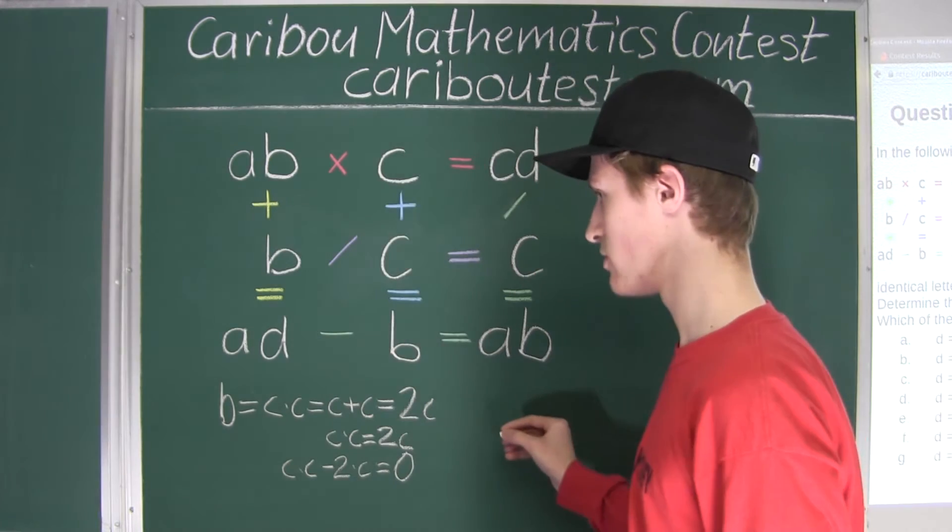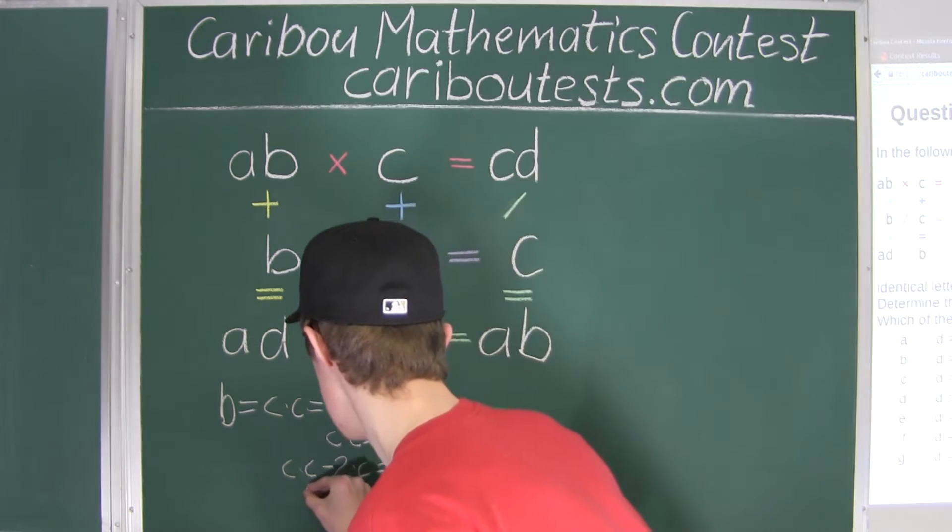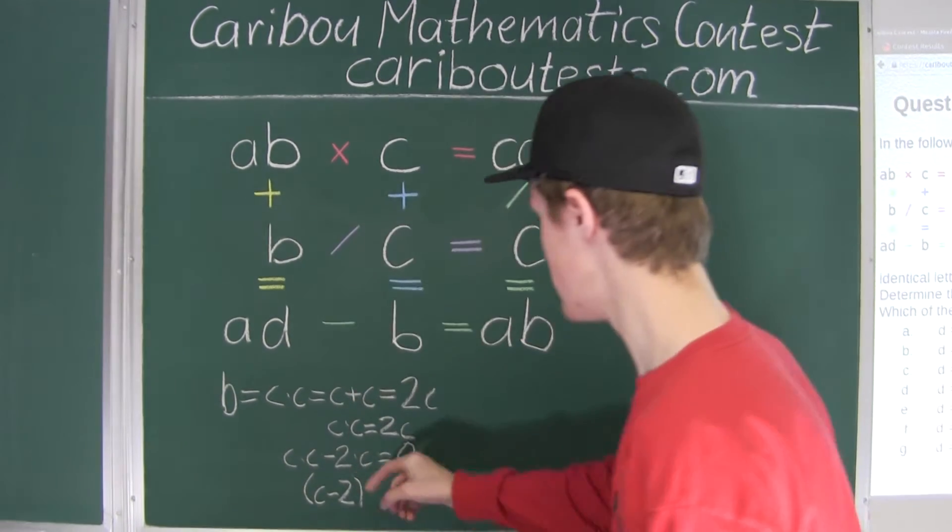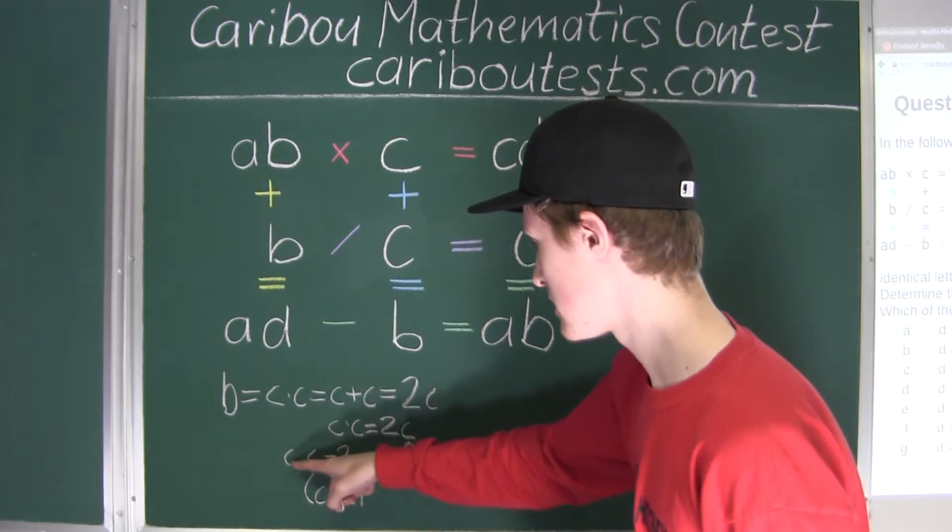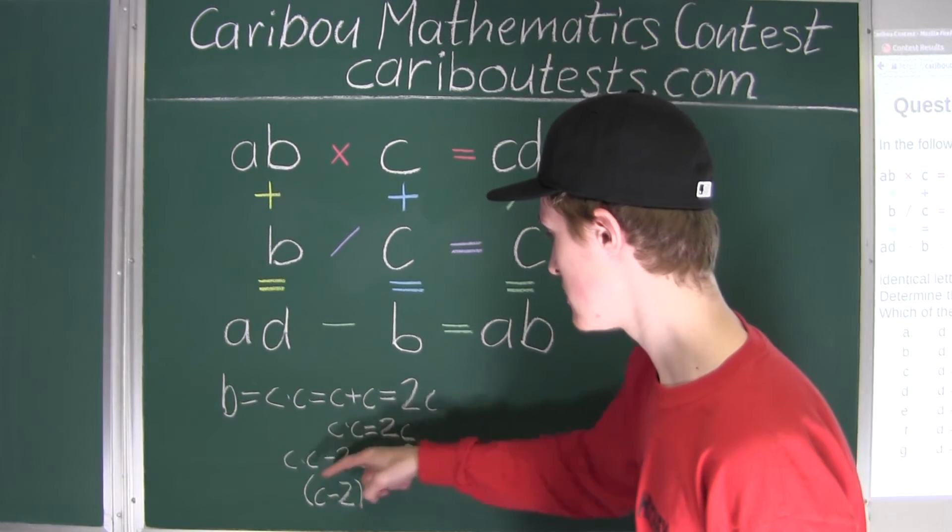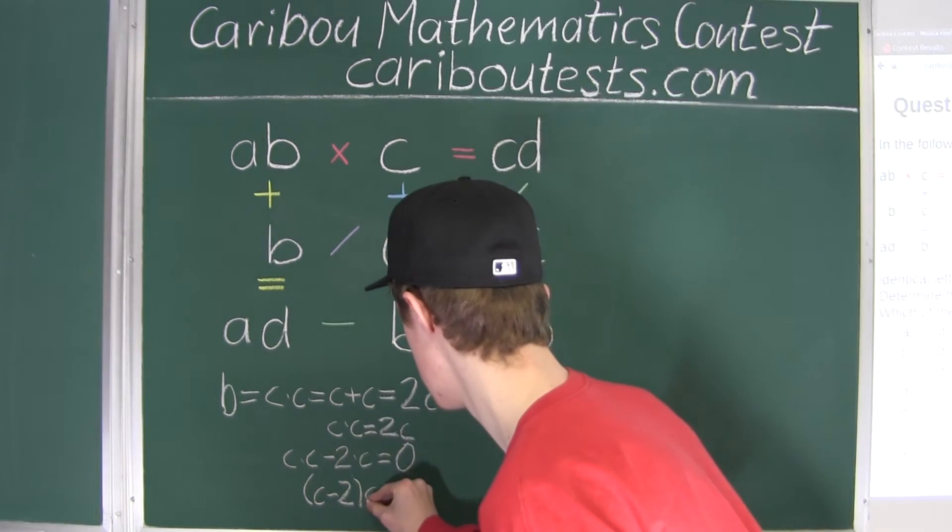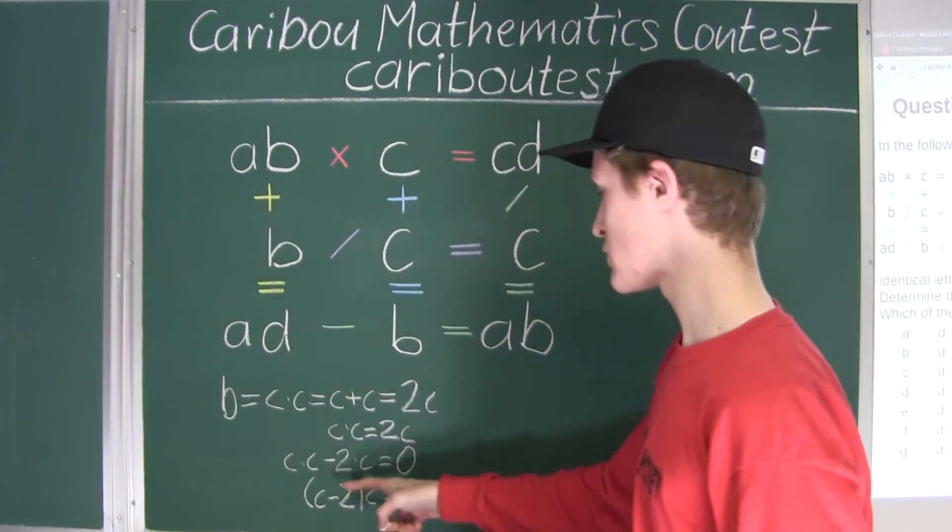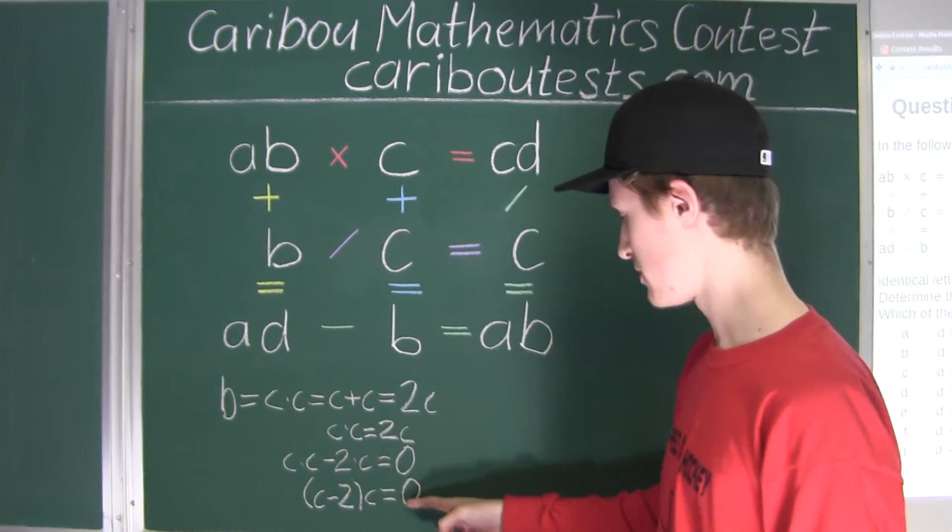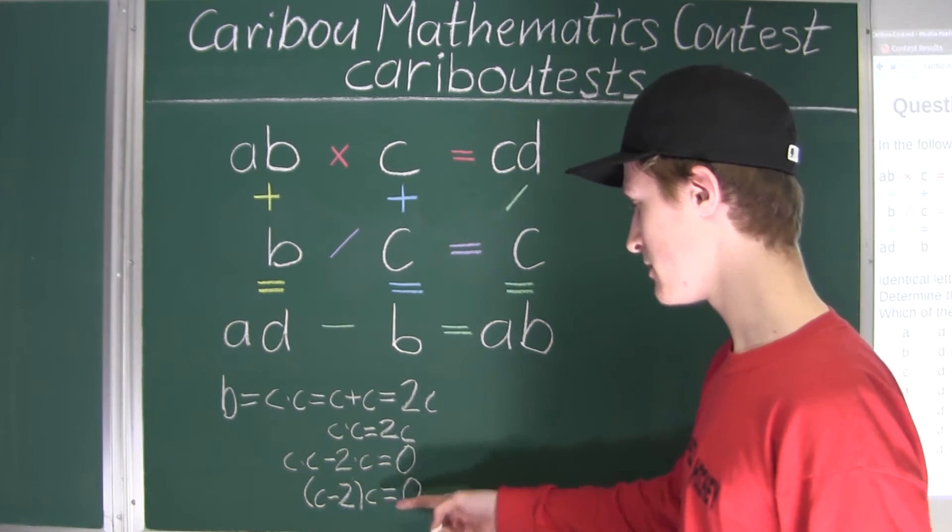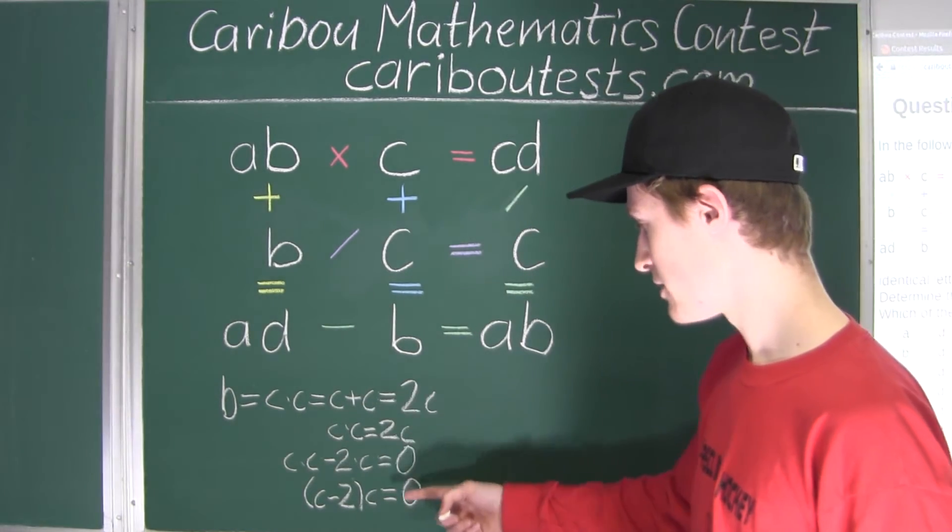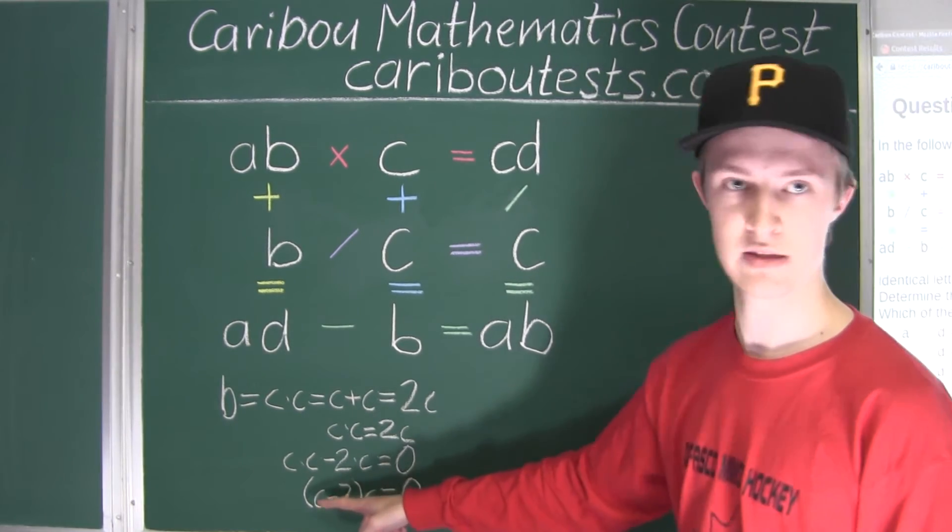That must be equal to 0. And now the distributive law states, well, we have C minus 2, and then we can write it like that, because we have a factor of C here, and a factor of C here. So, it would be written like this. So, C minus 2 in brackets times C is equal to 0. And here we can clearly see that C must be either 0, or it must be 2.